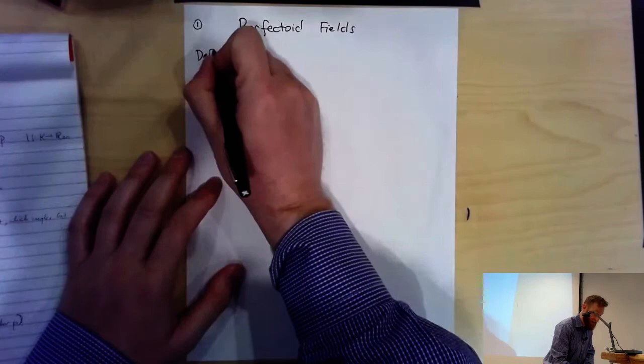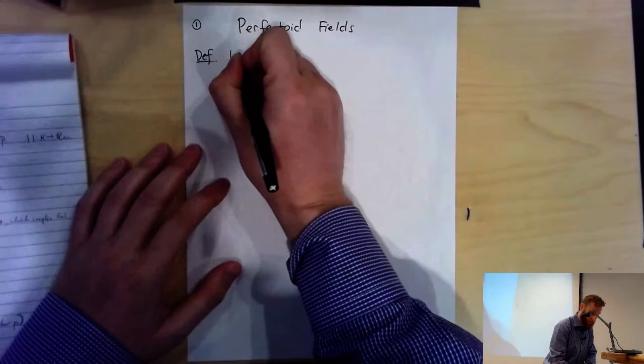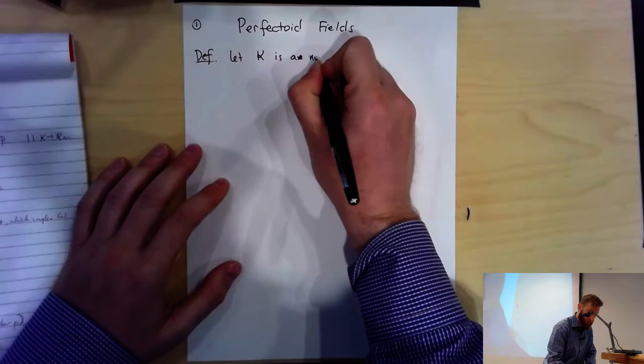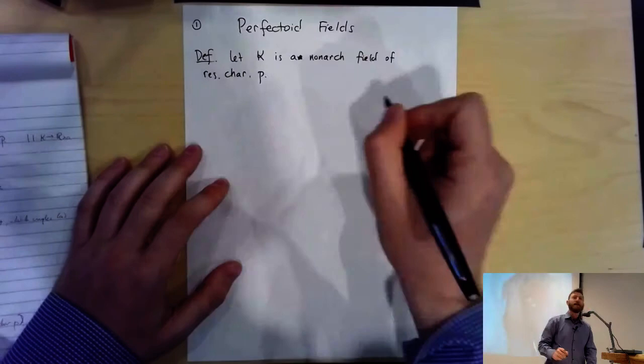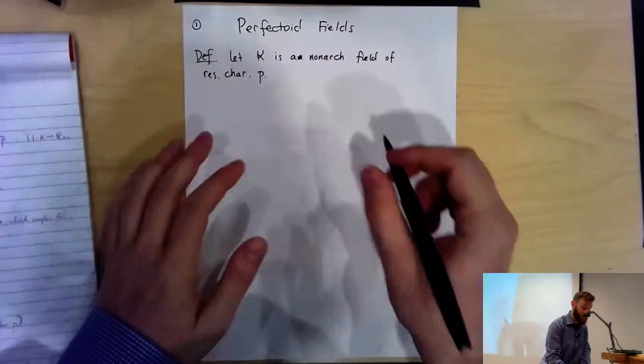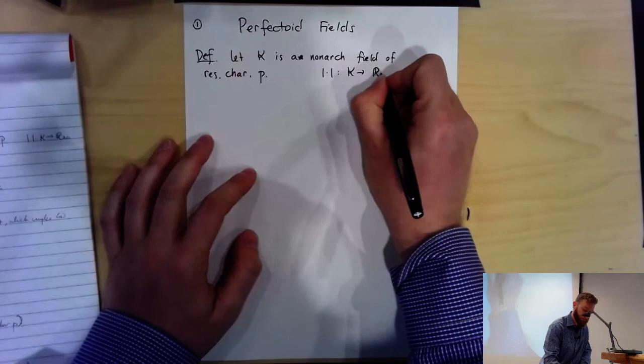Throughout this entire discussion, P is a fixed prime number. And let's suppose K is a non-Archimedean field of residue characteristic P. K is a field, and it's complete with respect to a non-Archimedean metric — I'm going to call that metric absolute value, and it is real valued.